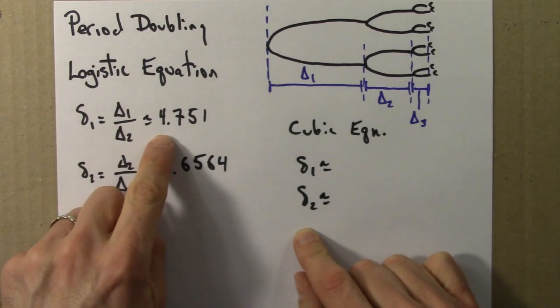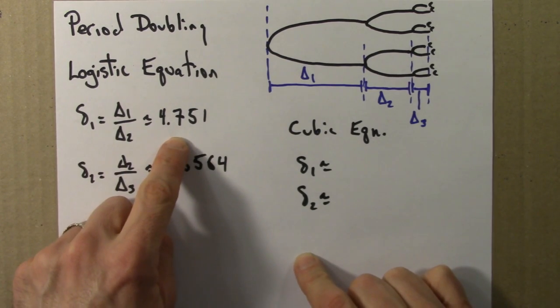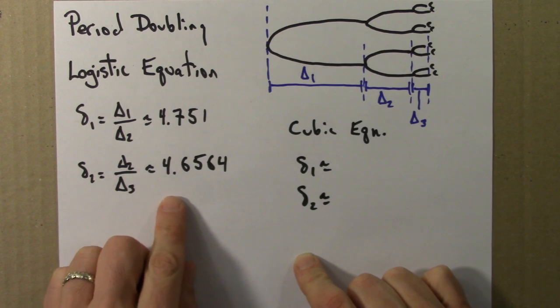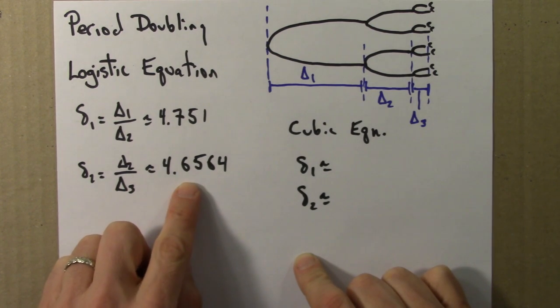And for the logistic equation, we found that delta 1 is about 4.75, and delta 2 is about 4.65, 4.66.